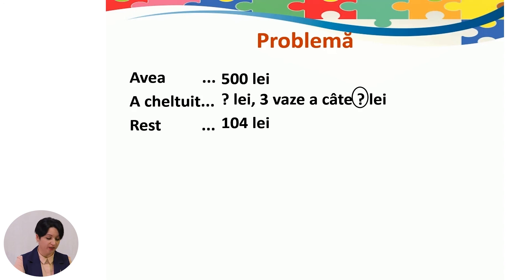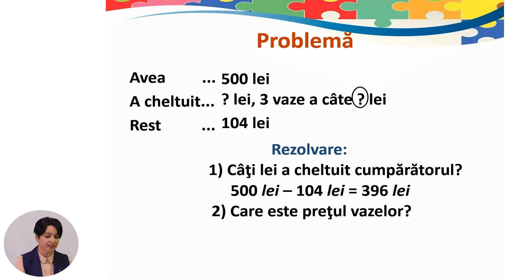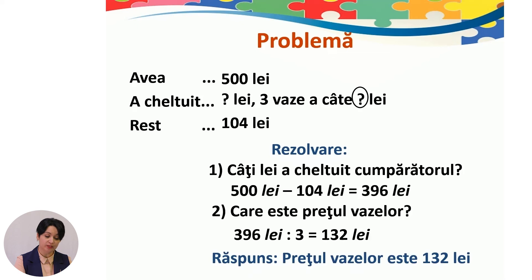Nu putem imediat răspunde la întrebarea problemei. Prin prima operație trebuie să aflăm câți lei a cheltuit cumpărătorul pentru întreaga cumpărătură: 500 − 104 = 396 lei. Dacă pentru 3 vaze identice s-au cheltuit 396 de lei, putem afla prețul vazelor: 396 ÷ 3 = 132 lei. Răspuns: prețul vazelor este 132 lei. Bravo, copii!